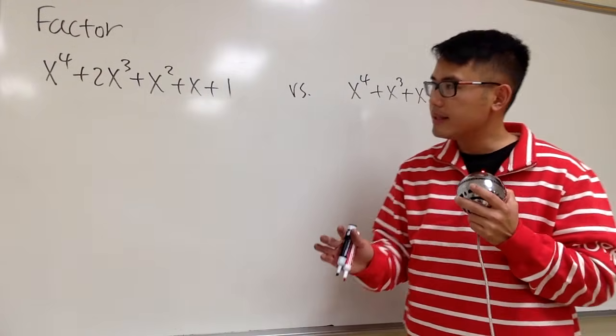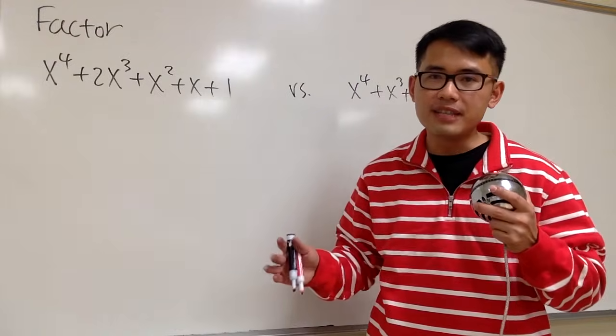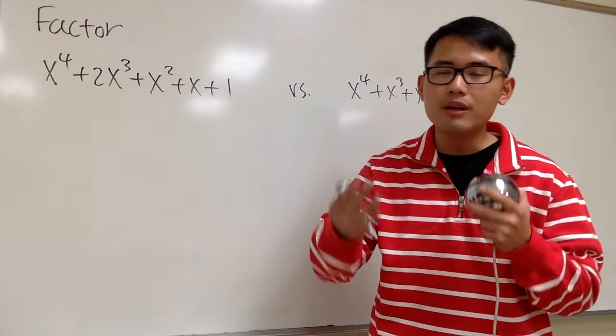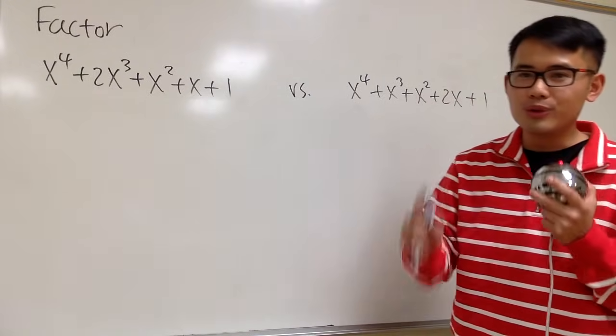And right here, whenever we're trying to factor things out that has more than 3 terms, and that means if we have 4, 5, 6, or even more, we should do this by grouping.